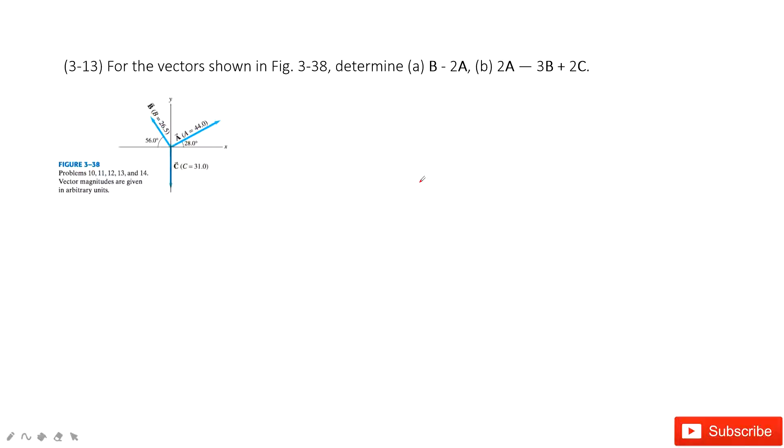In this problem, we do calculations for vectors. We have three vectors a, b, and c. We know their magnitude and direction. We need to calculate b - 2a and 2a - 3b + 2c.